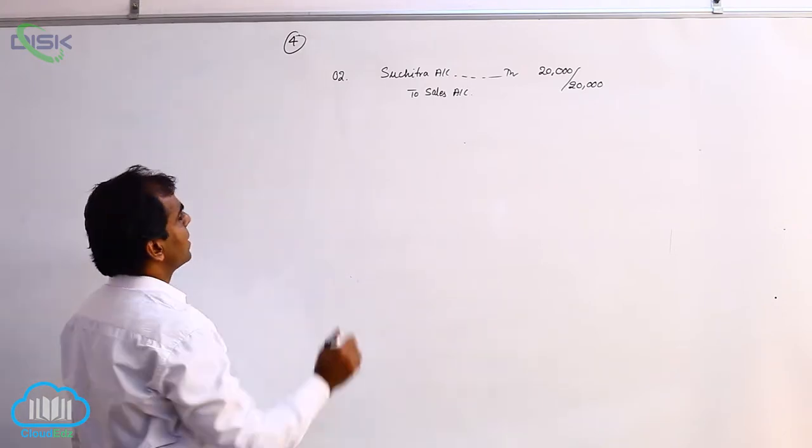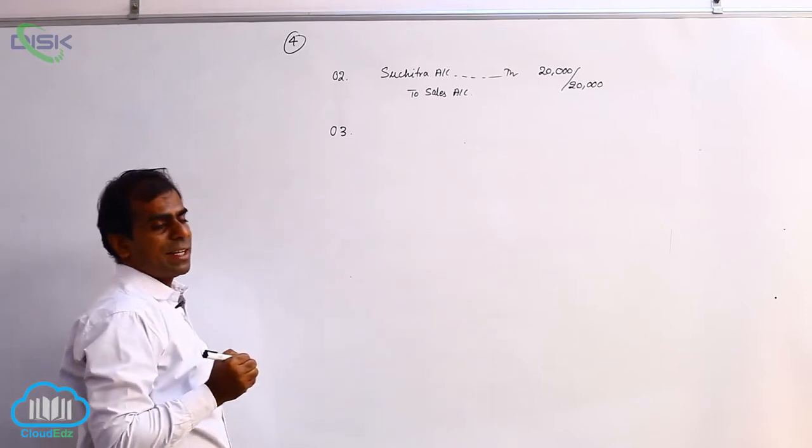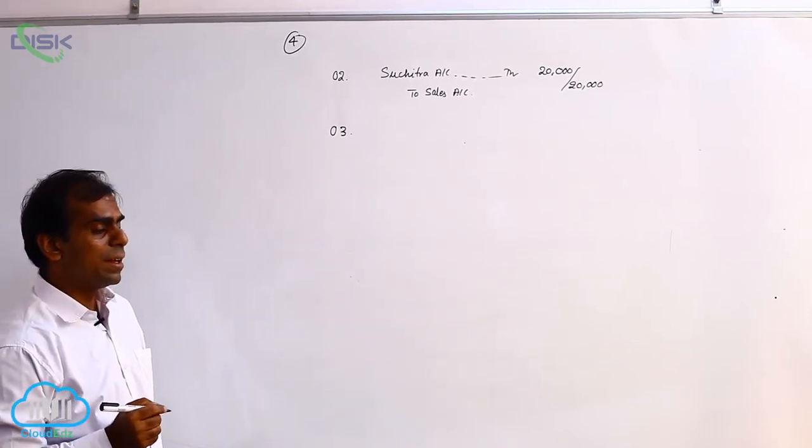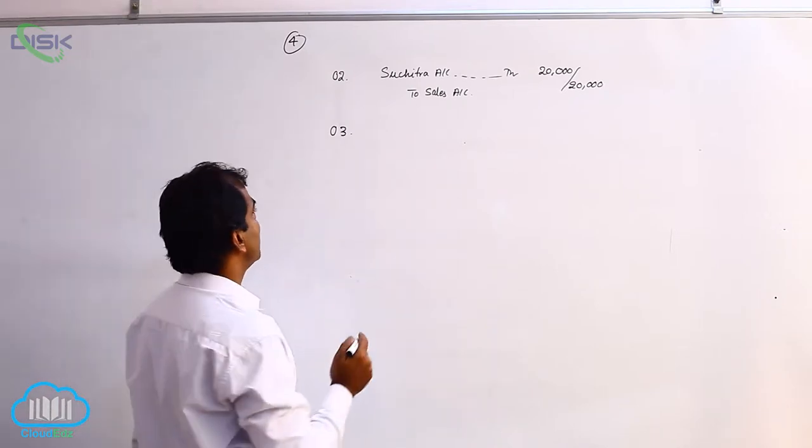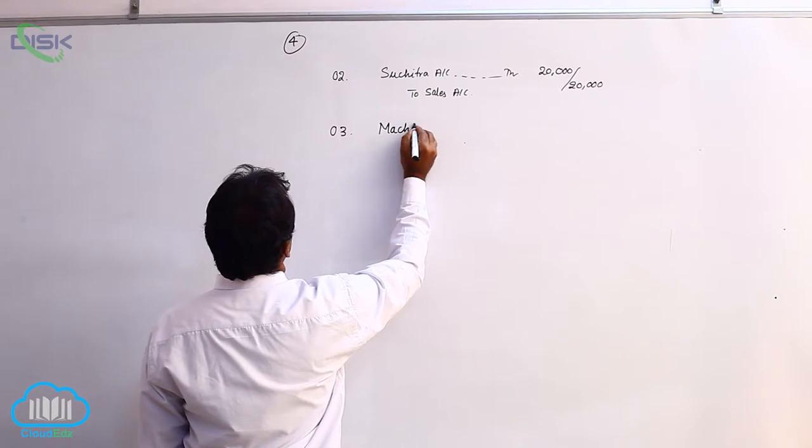Now, next transaction is purchased machinery. Machinery being real account, it is coming in when we buy. So, debit what comes in. So, machinery account debit.